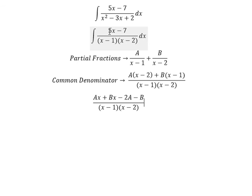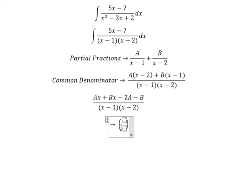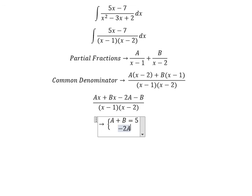For the coefficient of s, we get A plus B equal to 5. For the constant term, we get negative 2A minus B equal to negative 7.